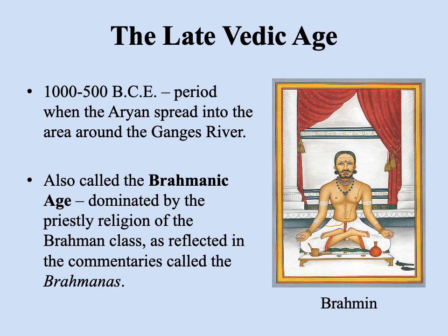Between 1500 BCE onward, the Aryans began moving down the Ganges River, displacing whatever people were already in the northern part of India, pushing them further south. This period is often referred to as the late Vedic age, sometimes called the Brahmanic age, because it's during this period that a particular priestly caste emerges as the dominant social group — the Brahmin class. This is reflected in the most important Vedic texts from this period, commentaries known as the Brahmanas. Here we see a Brahmin sitting in meditation — this is the priestly caste, and we're starting to see the caste system take shape.